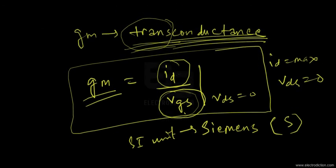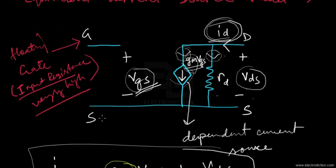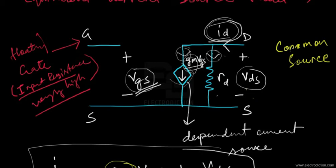From the equivalent current source model, if we now take a look at another model, we arrive at the voltage control model of the FET. One more thing to note: the source is connected together, which refers to the fact that the FET is used as an amplifier under the common source configuration — the model is based on the common source configuration.